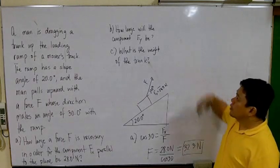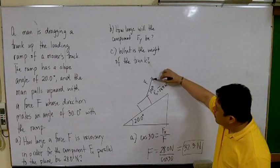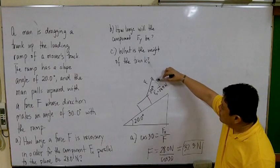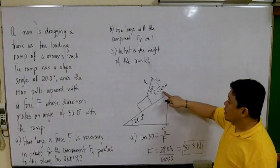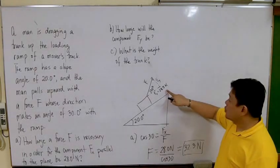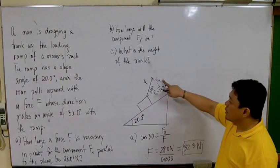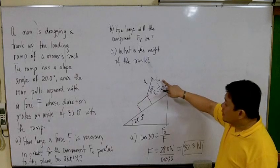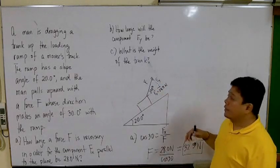In letter B, how large will the component F_y be? This one, F_y. So we are still given F_x to be 28 newtons, and you would like to get F_y given an angle of 30 degrees.